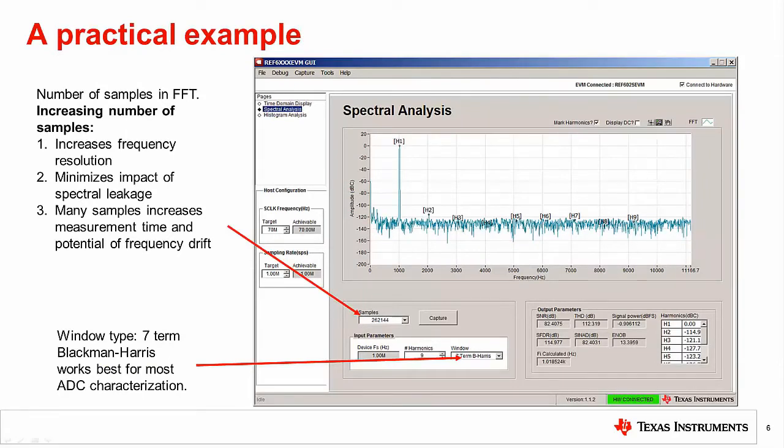This slide shows an example of the FFT feature on our evaluation modules. Notice that SNR, THD, SINAD, and other AC performance metrics are displayed with the FFT. Also, you can zoom in on the first nine harmonics as shown here.